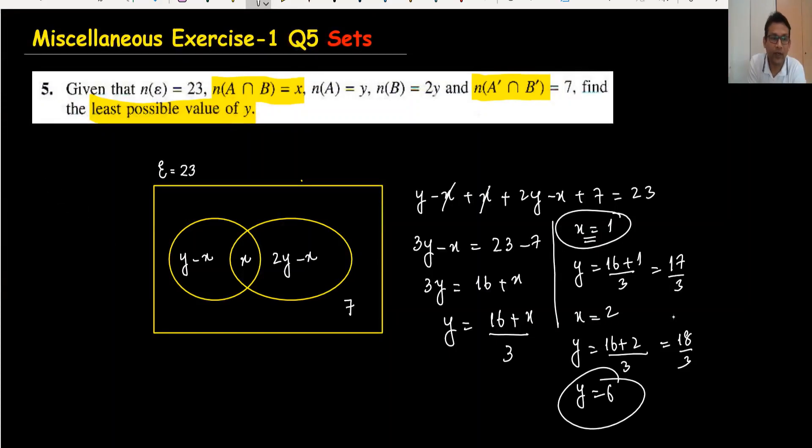When I substitute x = 3, y = (16 + 3)/3 = 19/3, not possible because it doesn't cancel—we need no decimals. When x = 4, we get (16 + 4)/3 = 20/3, again not possible.